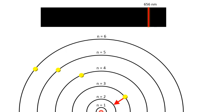A transition from the fourth orbit to the second orbit emits blue-green light at a wavelength of 486 nanometers. Jumping from the fifth orbit to the second orbit emits blue-violet light at a wavelength of 434 nanometers.